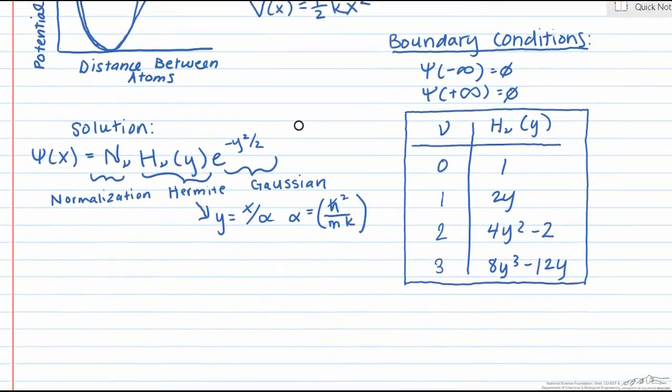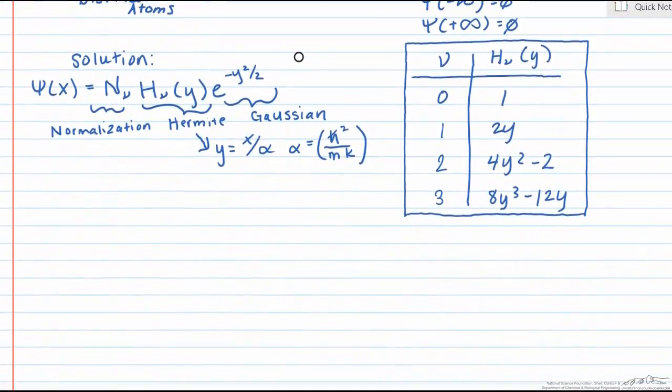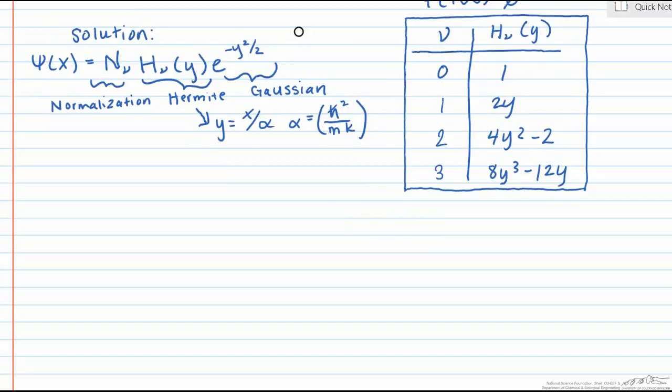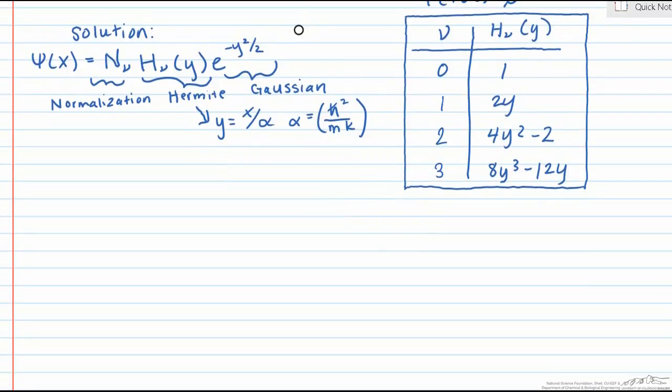Now that we have the general form of the solution, let's plug this back into our Schrodinger equation to solve for the energies. Let's start with the lowest energy state where ν equals zero and the corresponding Hermite polynomial equals one. We'll need the second derivative of our wave function with respect to x, which is shown here.